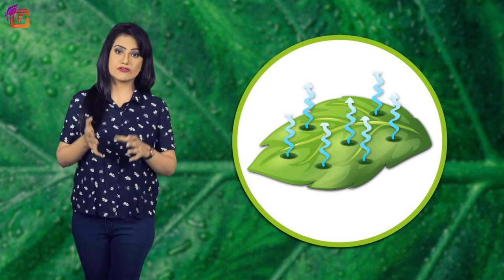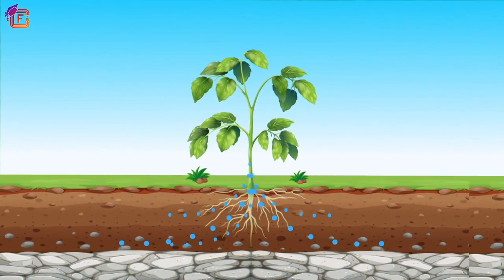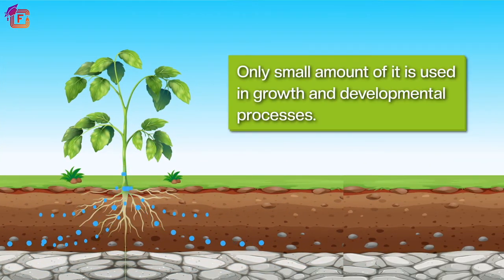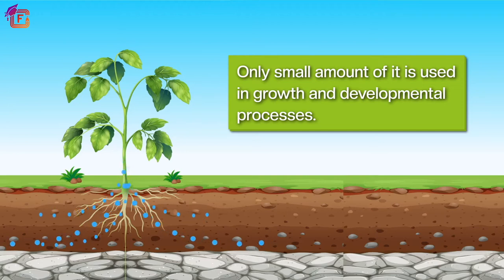Transpiration is the process to remove extra water from the plant body. Plants absorb plenty of water from the soil, but only a small amount is used in growth and developmental processes. Most of the absorbed water is eliminated in the form of transpiration, which can occur either through leaves or branches of the tree.